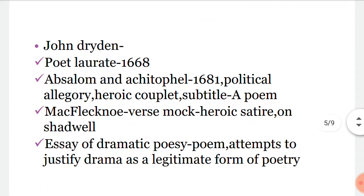Now let us talk about the major writers of this era. First, we have John Dryden. He became the Poet Laureate in 1668. He wrote Absalom and Achitophel in 1681, which is a political allegory written in heroic couplet. Next, he wrote Mac Flecknoe, in which he attacked Thomas Shadwell — it is a mock-heroic satire. He also wrote An Essay of Dramatic Poesy, in which he attempts to justify drama as a legitimate form of poetry.